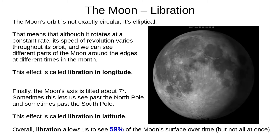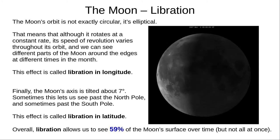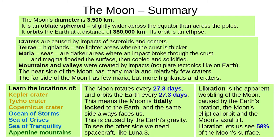For the rest, we need spacecraft. That's all for this video. Here's a summary of what you need to know: you're given the diameter and distance to the Moon in the exam, but you need to know the rotation and orbital period of 27.3 days, and that libration lets us see 59% of the Moon from Earth.